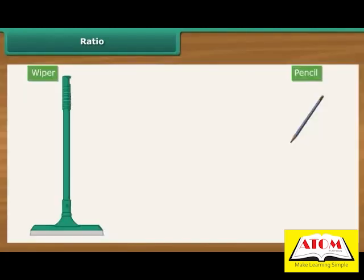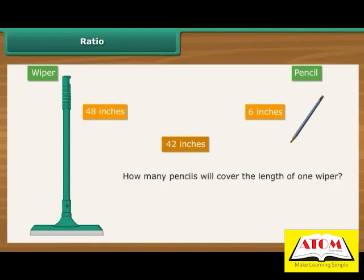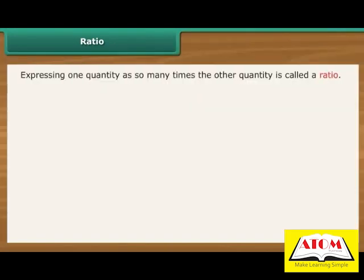For example, suppose we compare a 6 inch long pencil with a 48 inches long wiper. The wiper is 42 inches longer than the pencil. However, the difference does not bring out clearly the extent of variation in the lengths of the wiper and the pencil. How many pencils will cover the length of one wiper? The answer is 48 divided by 6, that is 8. In other words, the wiper is 8 times longer than the pencil. Expressing one quantity as so many times the other quantity is called a ratio.